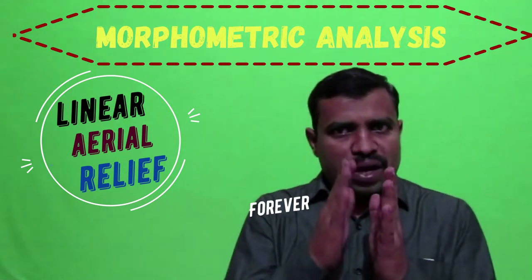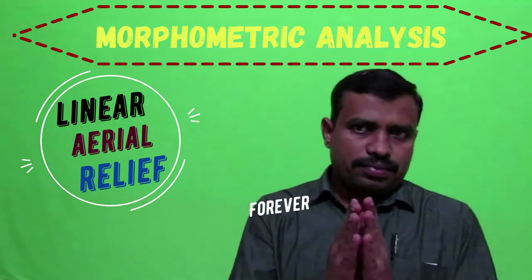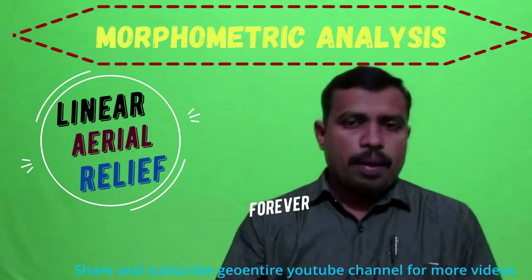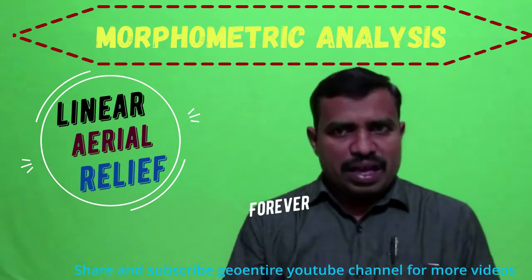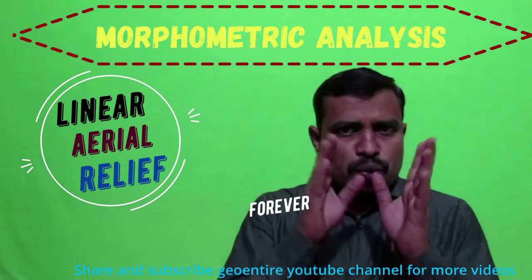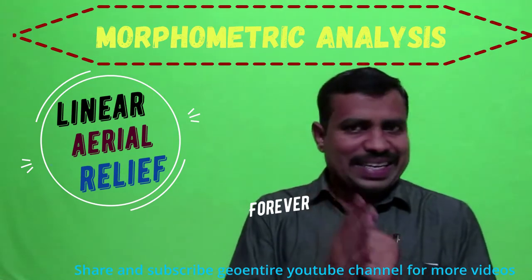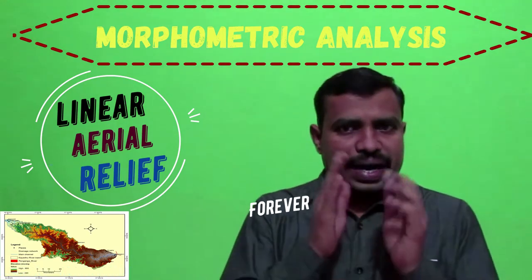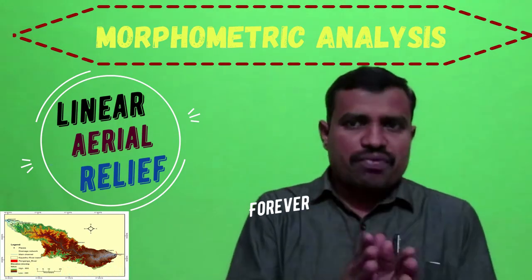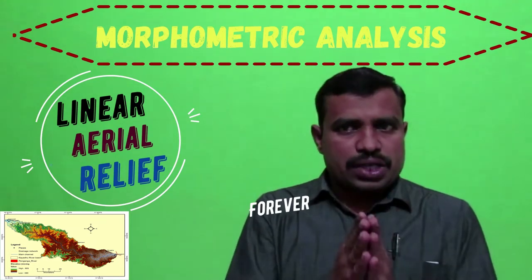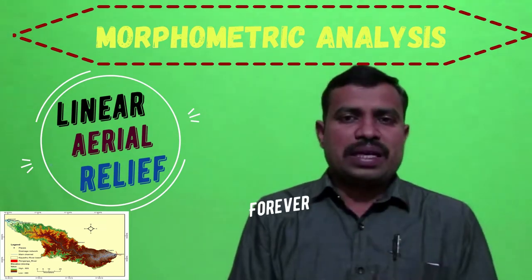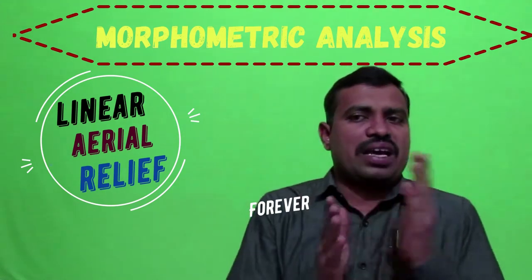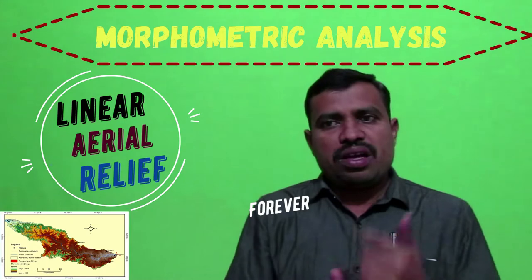Morphometric analysis covers three parameter categories. The first is one-dimensional parameters: stream order, stream number, and bifurcation ratio. The second is two-dimensional parameters: drainage density, stream length, stream length ratio, drainage texture, stream frequency, circulatory ratio, and form factor. The third is the relief aspect, which deals with three-dimensional parameters like relief, relief ratio, and slope.